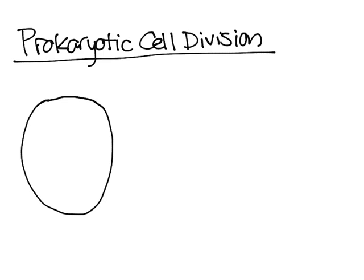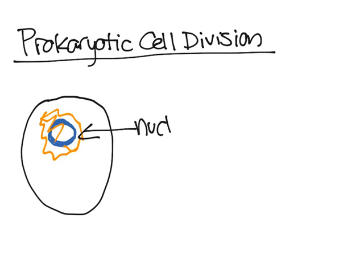A prokaryotic chromosome — I'll use blue for the chromosome — is essentially just a ring. Imagine that as the chromosome. The area it's in, shown in orange, is called the nucleoid, since there is no nucleus. The chromosome is actually roughly, in most prokaryotes, a thousand times the length of the cell.